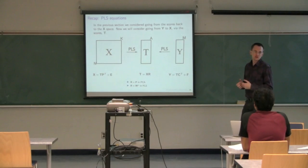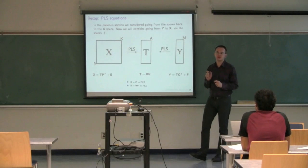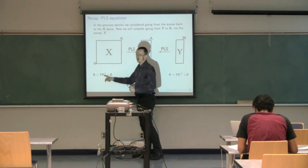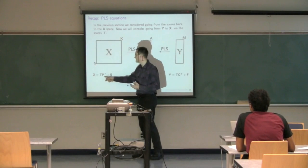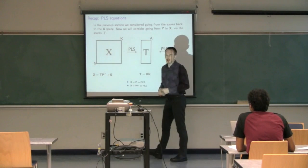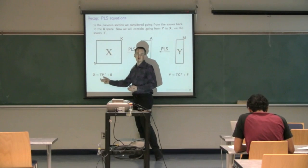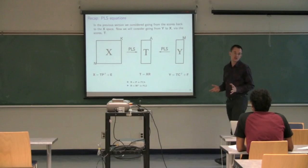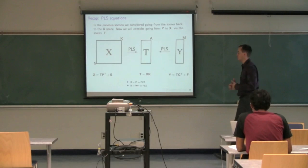To understand what's going on here, it's critical to realize that we have a model for both the X-space and the Y-space, and that space has a common link to the scores. The model for the X-space in PLS looks like the PCA equation: X equals TP transpose plus an error. That TP transpose is our prediction for the X-space. PLS is unique among all regression models in that it has a model for the X-space; all other regression models only go from the Xs to Y.